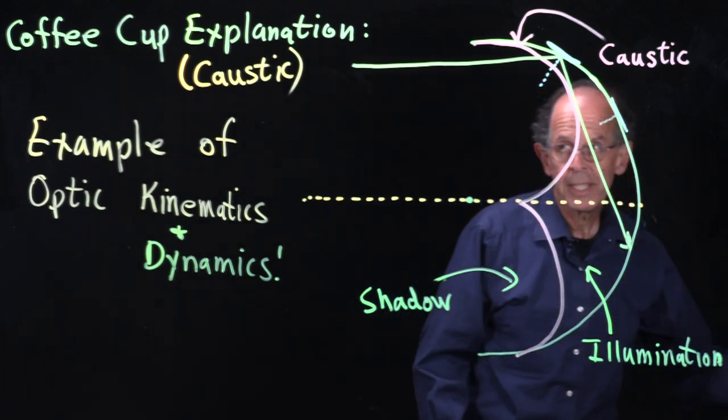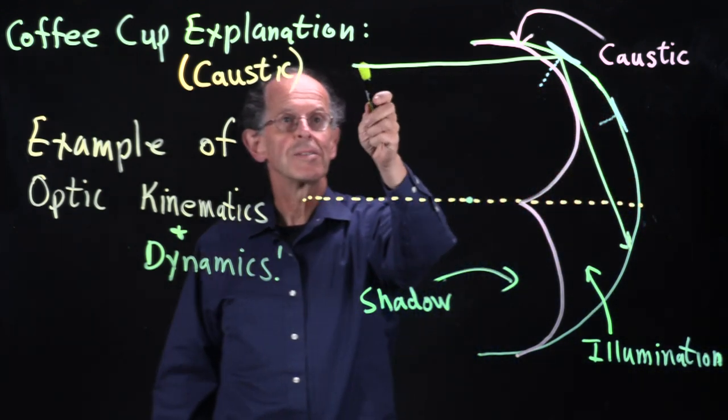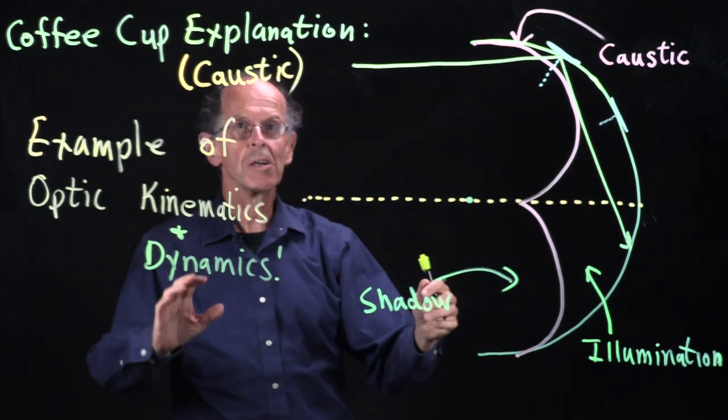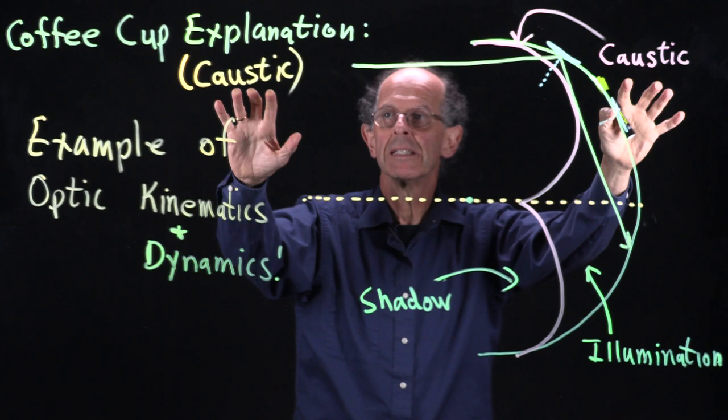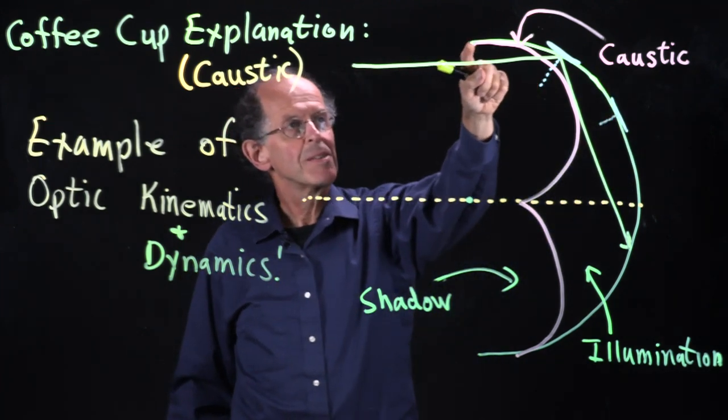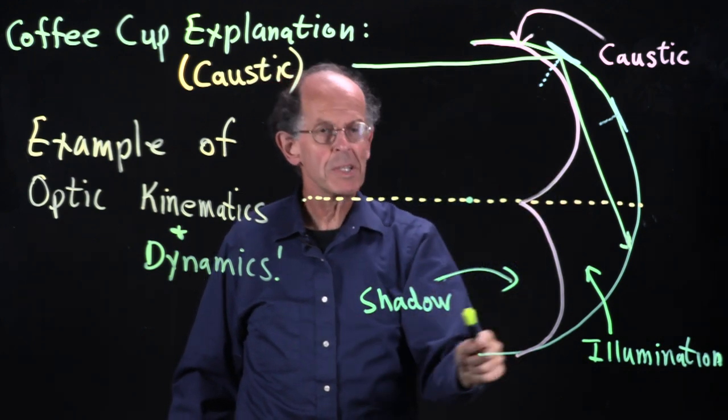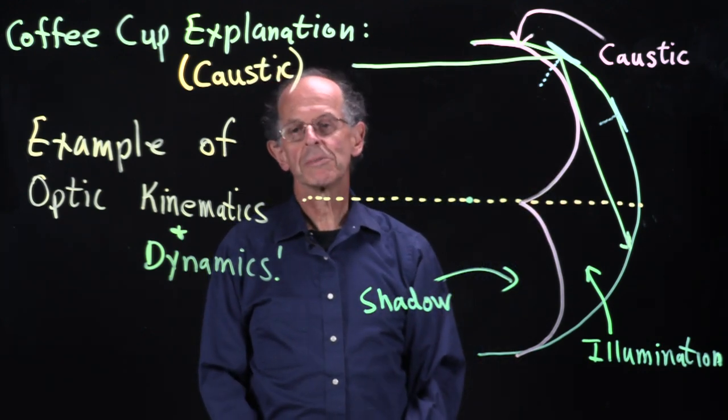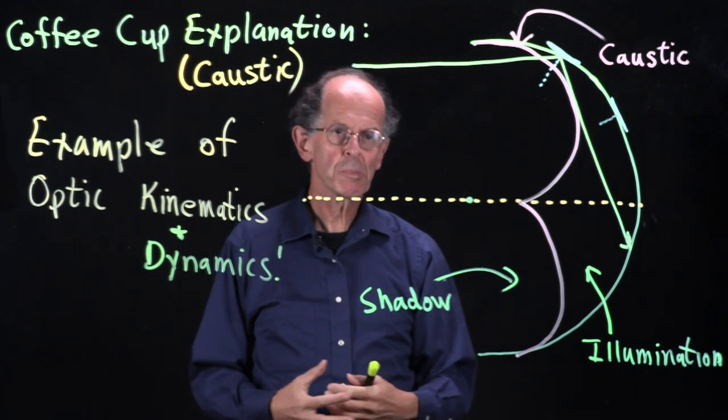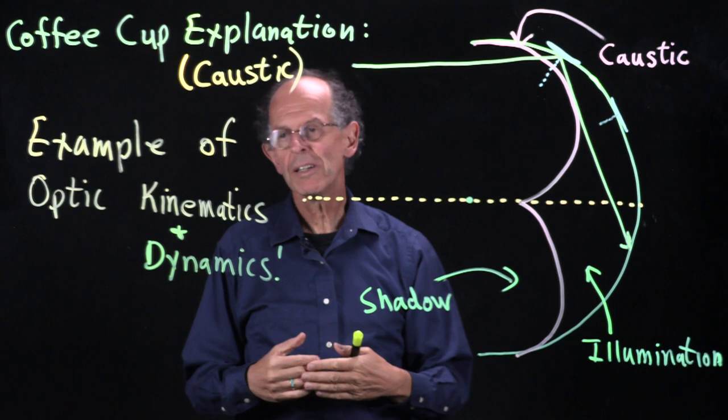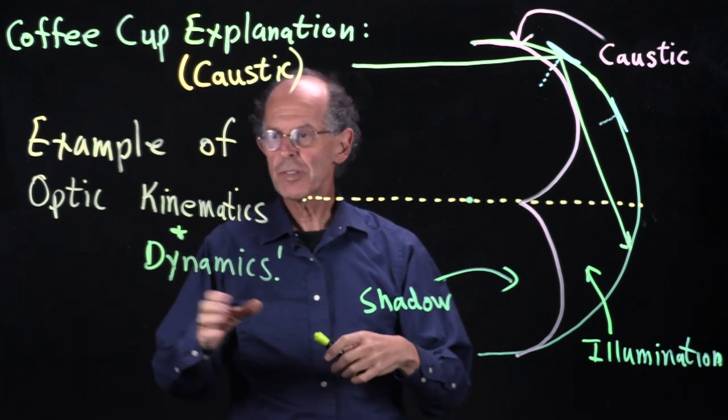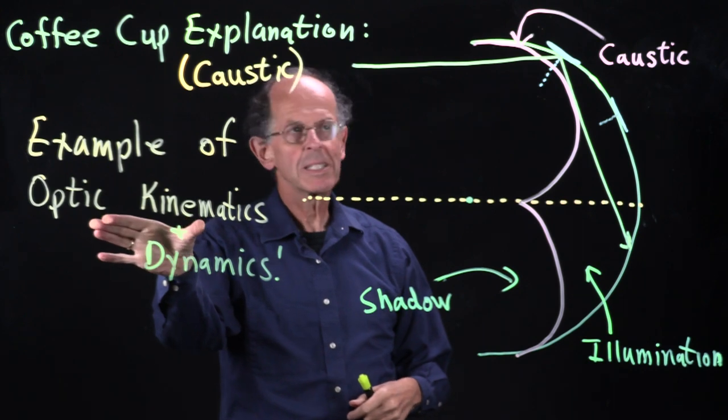Now we can actually explain this pink pattern which is called a caustic. Caustic is the Greek word to burn. As we saw, that pink backwards three here on the light board, which you saw in the bottom of the cup, is a focus point. The light focuses there due to a coincidence of reflections. This is an example of optic kinematics.